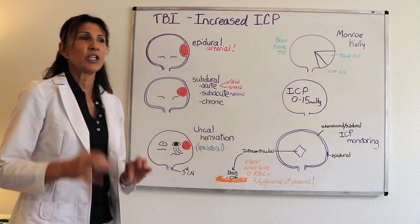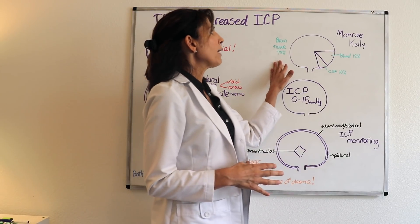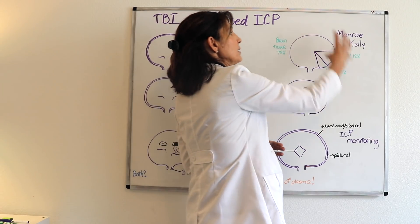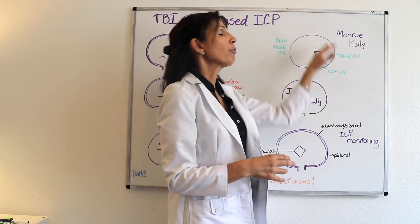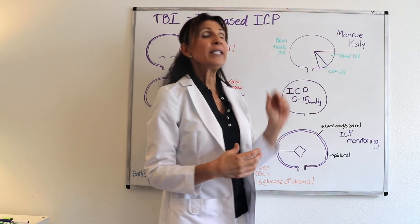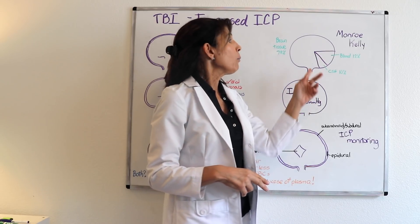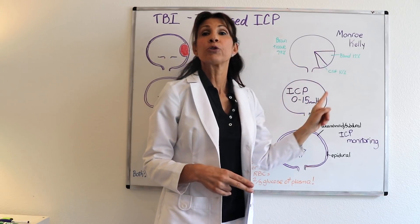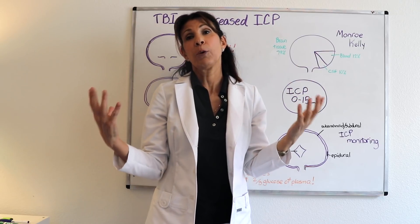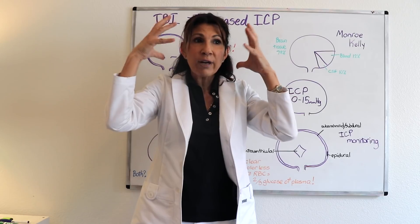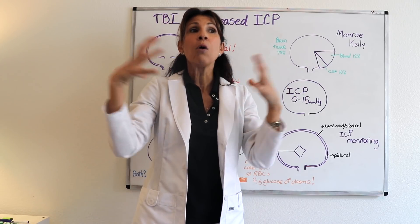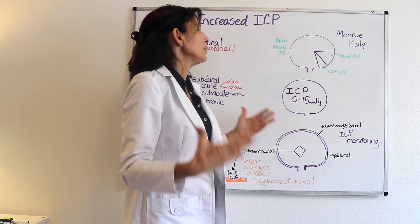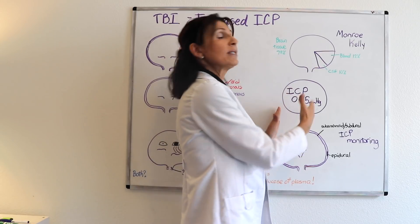To understand intracranial pressure, we need the Monroe-Kellie hypothesis, which states there are three contents within the cranial vault: brain tissue, blood, and cerebrospinal fluid. When there is an increase in any one of those contents, there must be a corresponding decrease in one of the other two. Otherwise, intracranial pressure rises, because we have an unforgiving skull — a cranial vault made of bone that will not accommodate pressure changes beyond a certain parameter.